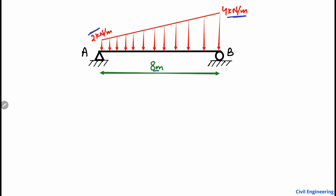We will go step by step into the analysis of this beam. First of all, we will divide this loading into two parts. The first part is a rectangle — you can see the rectangular load here. The second part is a triangle, which will be the second part of the loading on the beam.